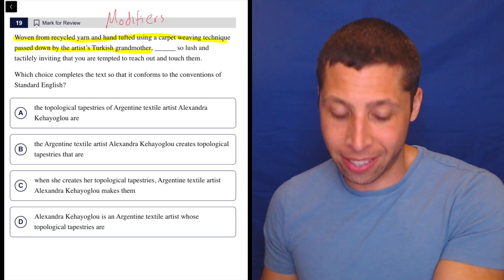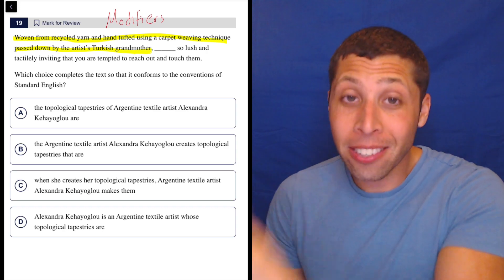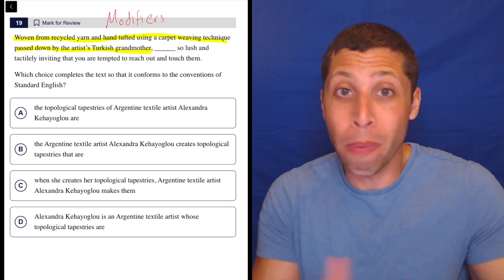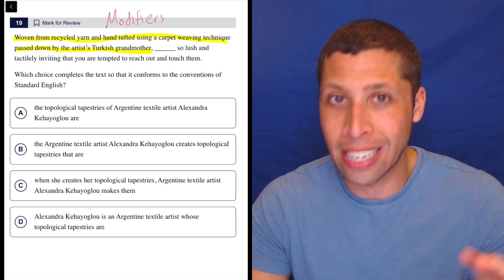And it's leading us into the main sentence. So whatever we're talking about in that intro clause has to start the sentence. We need to modify whatever that piece of the sentence is. That's what the modifier does. It gives a description.